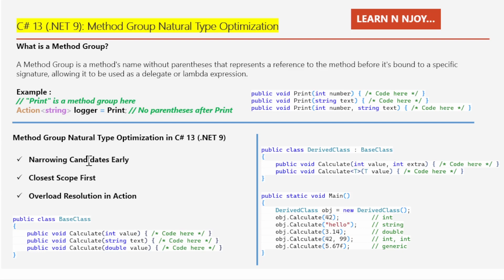Number one: narrowing candidates early. When you call a method, the compiler now does smart filtering. How does it do it? It looks at the arguments you're passing to the method. It quickly gets rid of any method that obviously won't work, like ones with totally incompatible parameter types. This way the compiler doesn't waste time on methods that can't possibly match and focuses only on the ones that might actually work. It's like sorting through a pile of keys to find the right one. It only tries the keys that could fit the lock and ignores the rest.